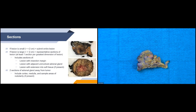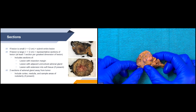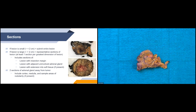For sectioning: if the lesion is small, less than 2 centimeters, submit the entire lesion — as with our case. If larger, greater than 2 centimeters, do representative sections at least one section per centimeter of greatest dimension. Include a section showing the lesion with the resection margin, the lesion with adjacent uninvolved adrenal gland, and a section showing the lesion's relationship to the soft tissue to check for microscopic invasion.